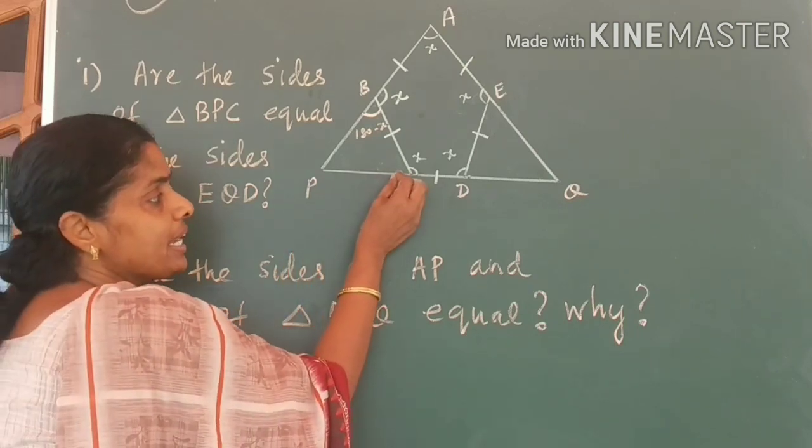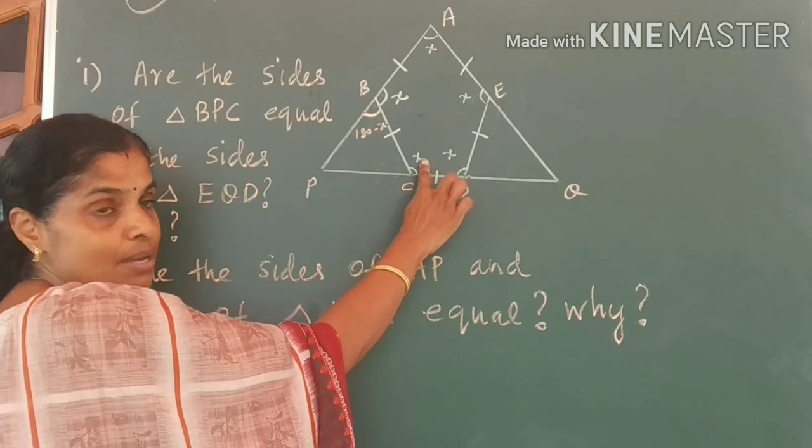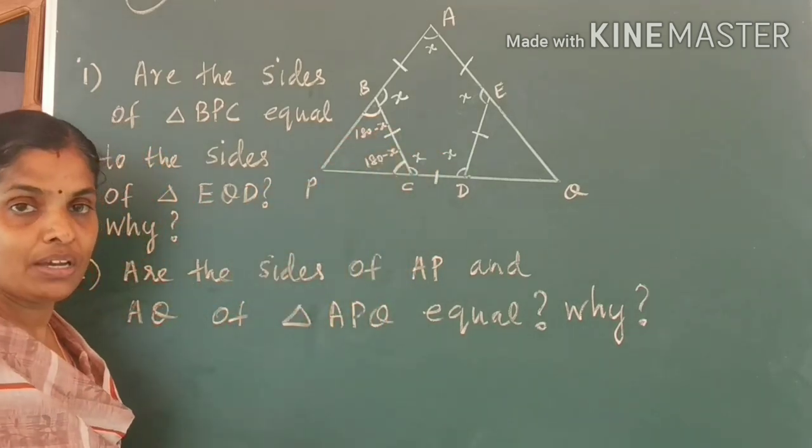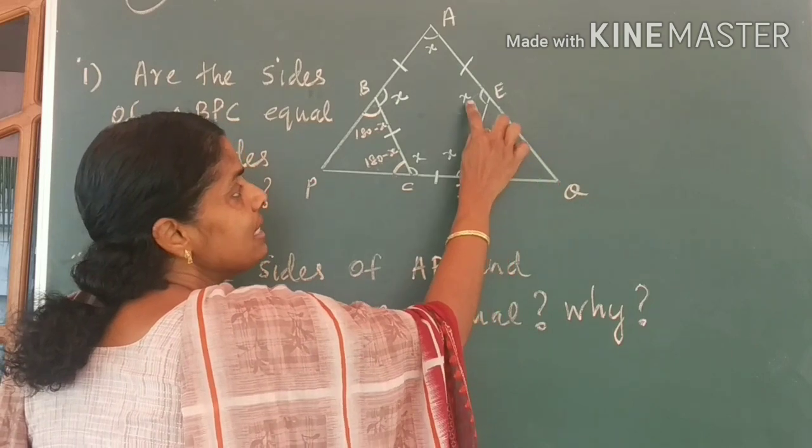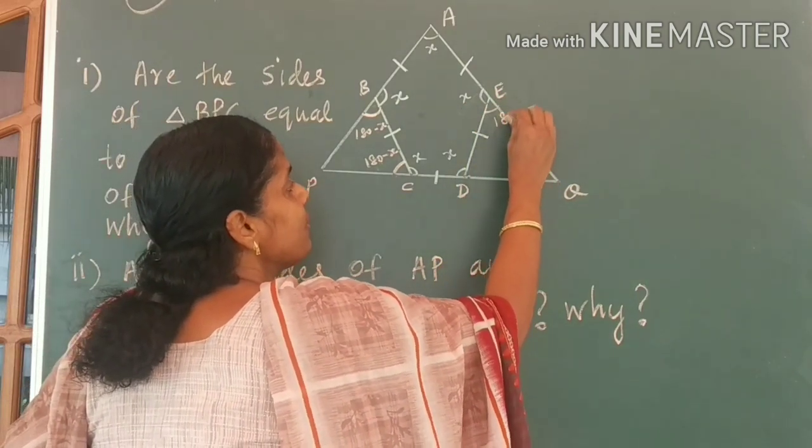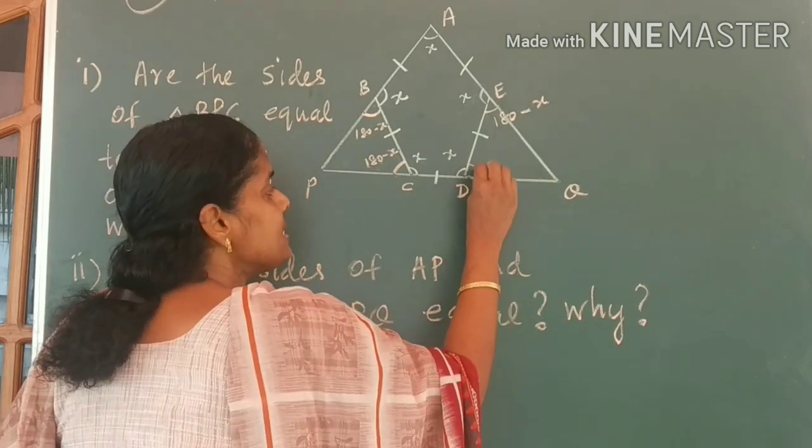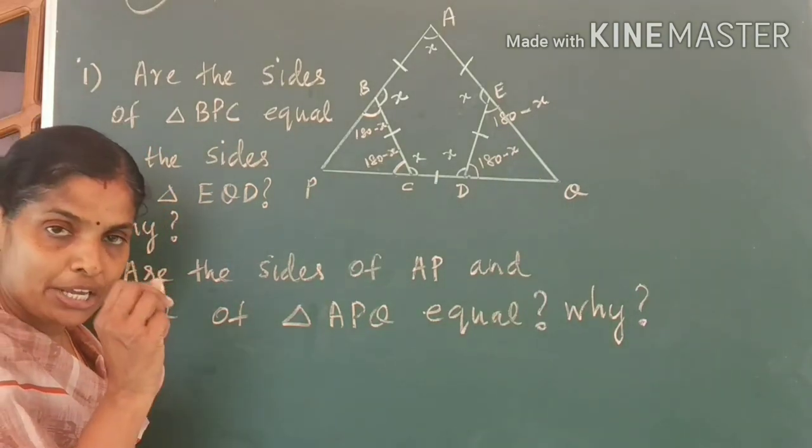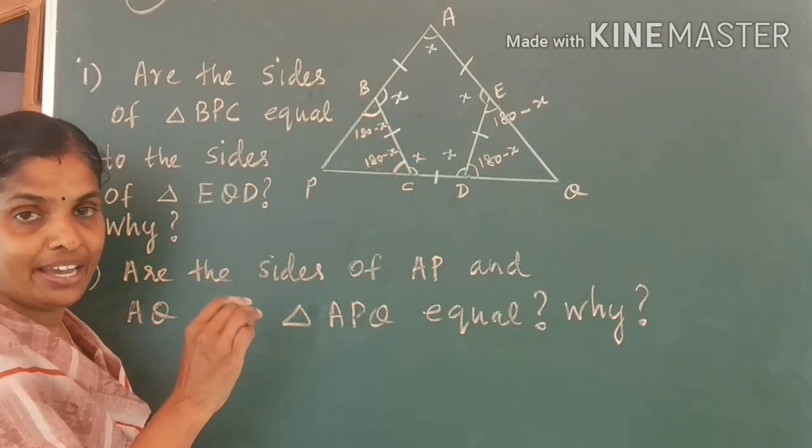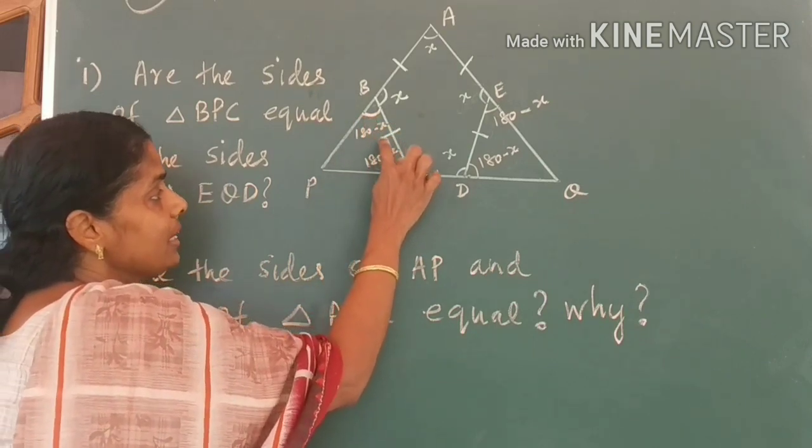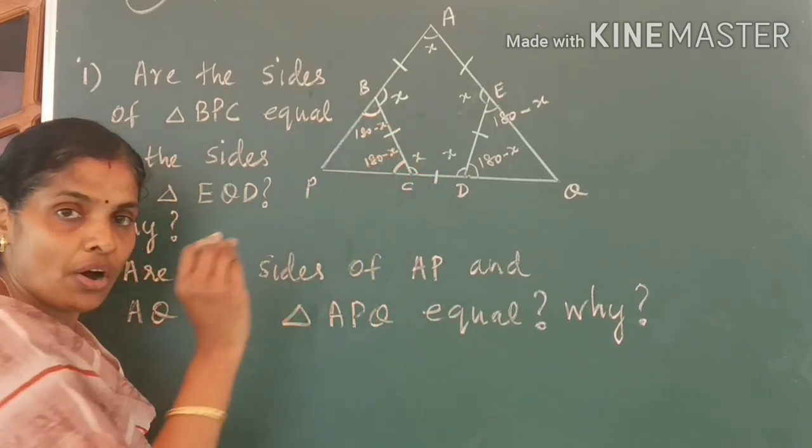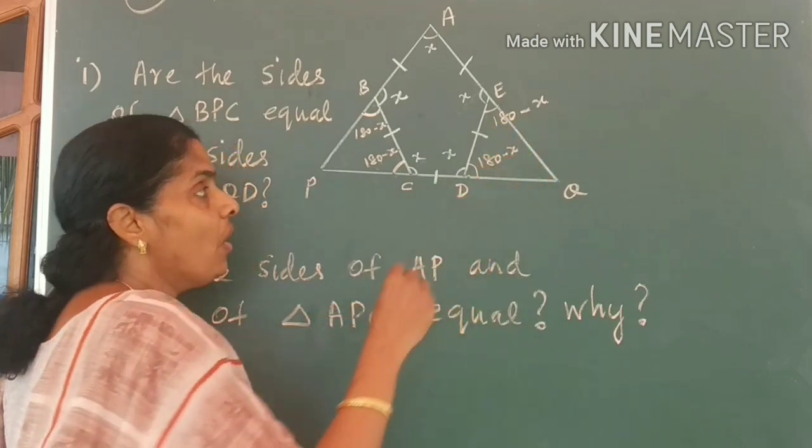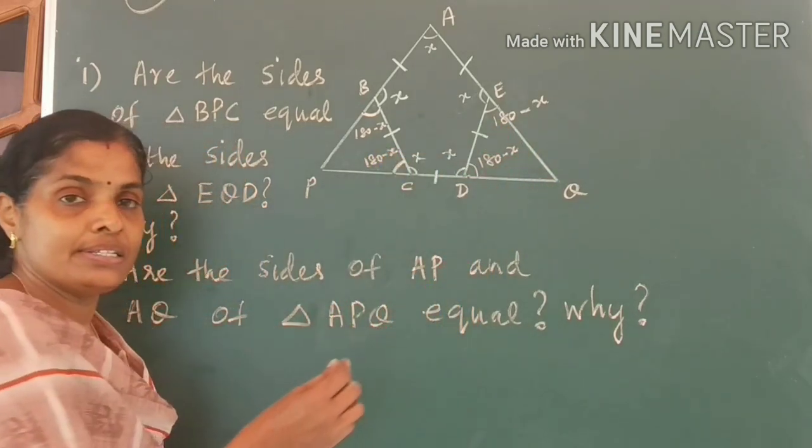The same idea is used here also. So, this angle is X. Therefore, the remaining angle here would be equal to 180 minus X. Come to the second triangle. In this triangle, since this is X, this angle is equal to 180 minus X. And this angle is also equal to 180 minus X. Now, what did you understand, children? By using ASA idea. By using angle included side and angle of one triangle are equal to angle included side and angle of another triangle. Therefore, these two triangles are equal.